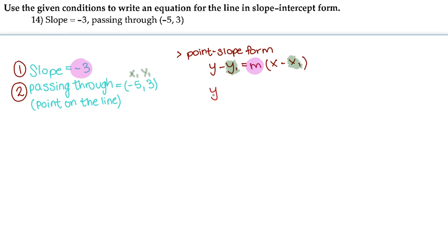This gives us y minus 3 is equal to negative 3 times x minus negative 5, which will give us y minus 3 is equal to negative 3 times x plus 5.